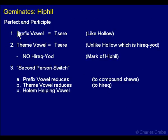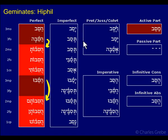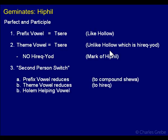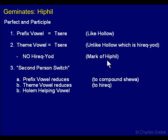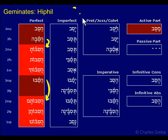Prefix vowel — this is for perfect and participle — it's tsere, like the hollow. Theme vowel is tsere, unlike the hollow verbs which have hiriq yod. So in the geminates and the Hiphil we have no hiriq yod, which is the mark of the Hiphil, or at least one of the really visible things. You see that hiriq yod in strong verbs between the second and third radical and think, 'I probably have a Hiphil.' Now we know that sometimes it's a tsere instead, but that hiriq yod is very visible, at least when you're looking at a text visually.